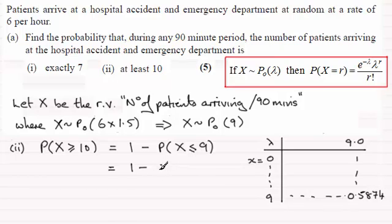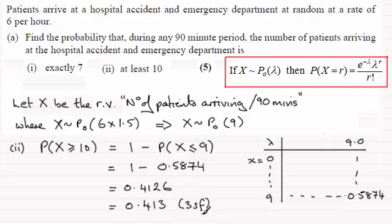So what we've got here is 1 minus 0.5874, and if you work that out you end up with 0.4126. If we give that to three significant figures, that's going to be 0.413 to 3SF. Okay?